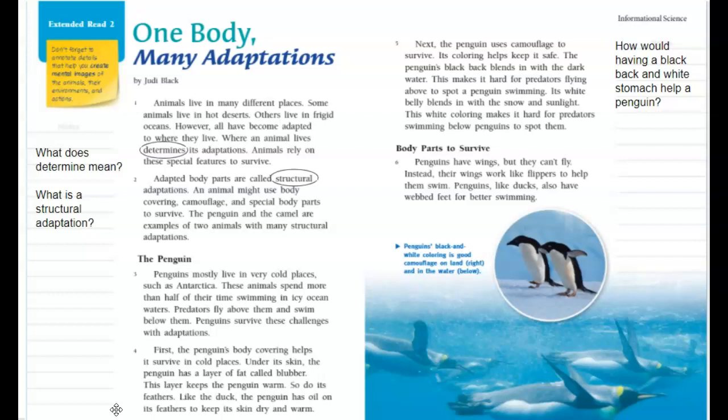The penguin uses camouflage to survive — its coloring helps keep it safe. The penguin's black back blends in with the dark water, making it hard for predators flying above to spot a penguin swimming. Its white belly blends in with the snow and sunlight, making it hard for predators swimming below to spot them.